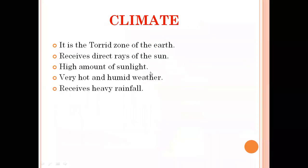Moving ahead to climate: the torrid zone extends from 0 to 23.5 degrees, but we are talking about the equatorial region particularly, which is from 0 to 10 degrees north and south. This equatorial zone is within the torrid zone and receives direct rays of the sun. Since the rays fall directly on that part, it receives a heavy amount of heat and humidity, and high amount of sunlight.